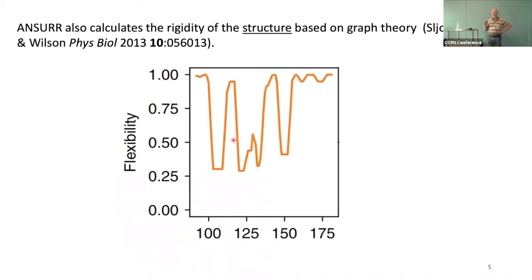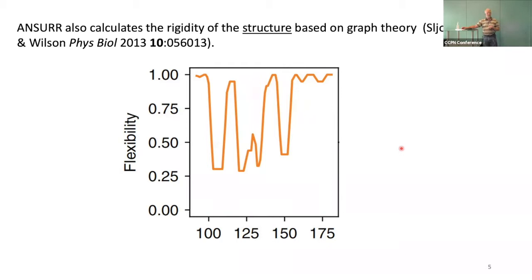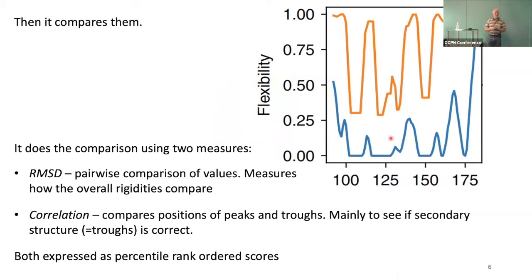What we do with the RCI is compare that result — basically experimental data — to a measure of rigidity determined from the structure. This uses a graph theoretical method: taking the structure, looking at all the distances including all the hydrogen bonds and hydrophobic contacts, and calculating what the rigidity of that structure is. You get a graph that looks similar to the RCI data. Then we compare the RCI score (blue) to the rigidity score from the structure (orange) and ask: how similar are those two graphs? That's our measure of whether it's a good structure.